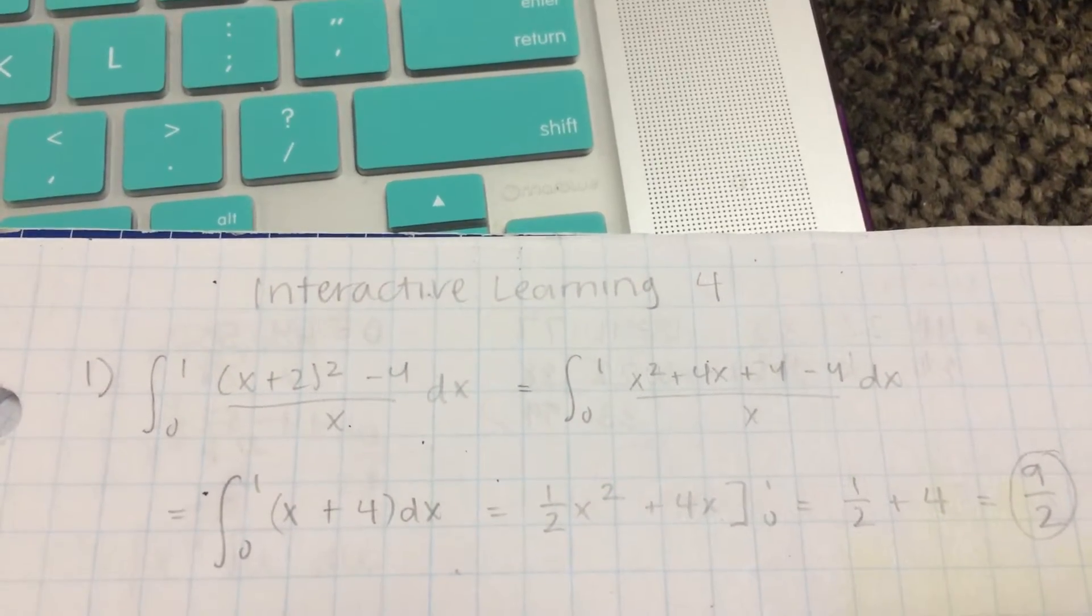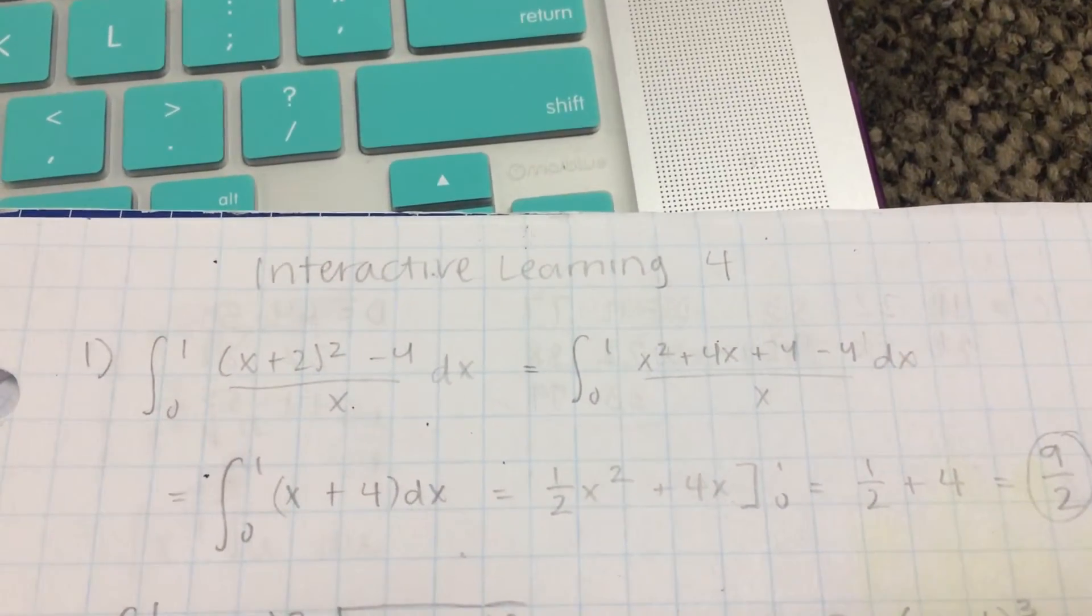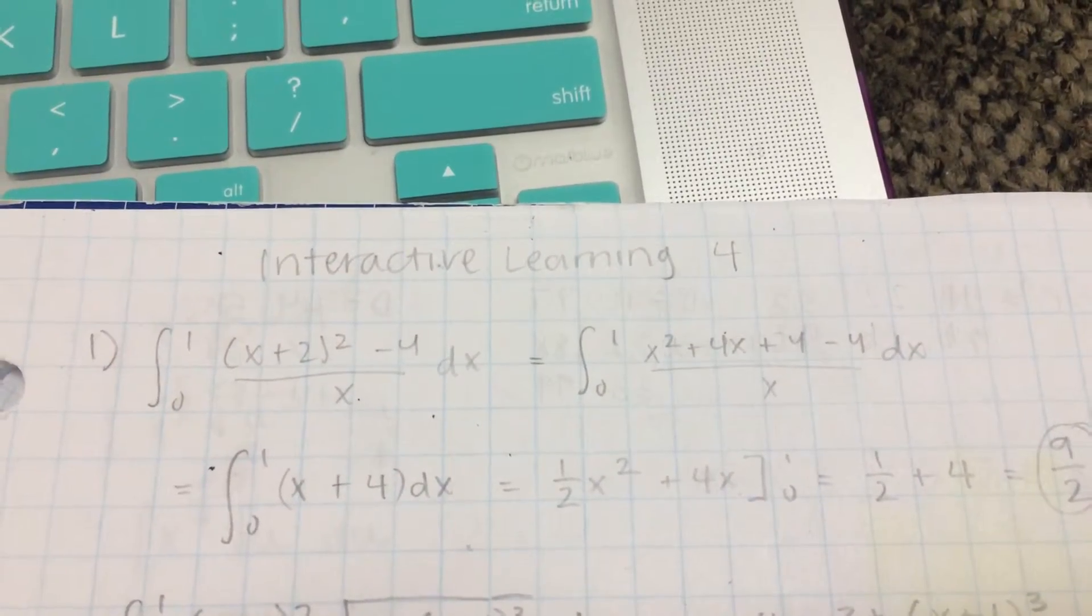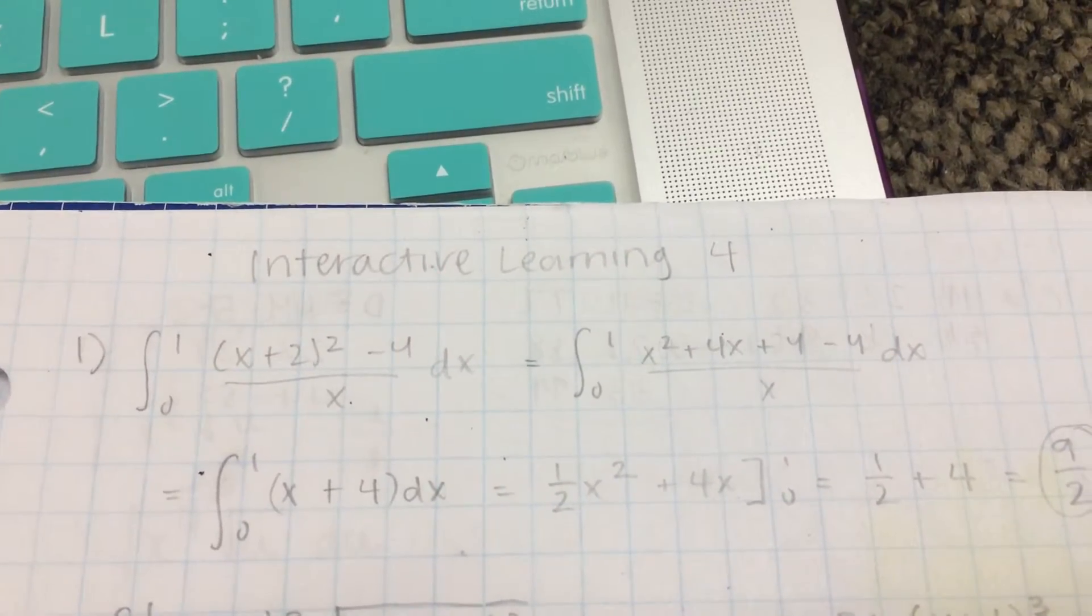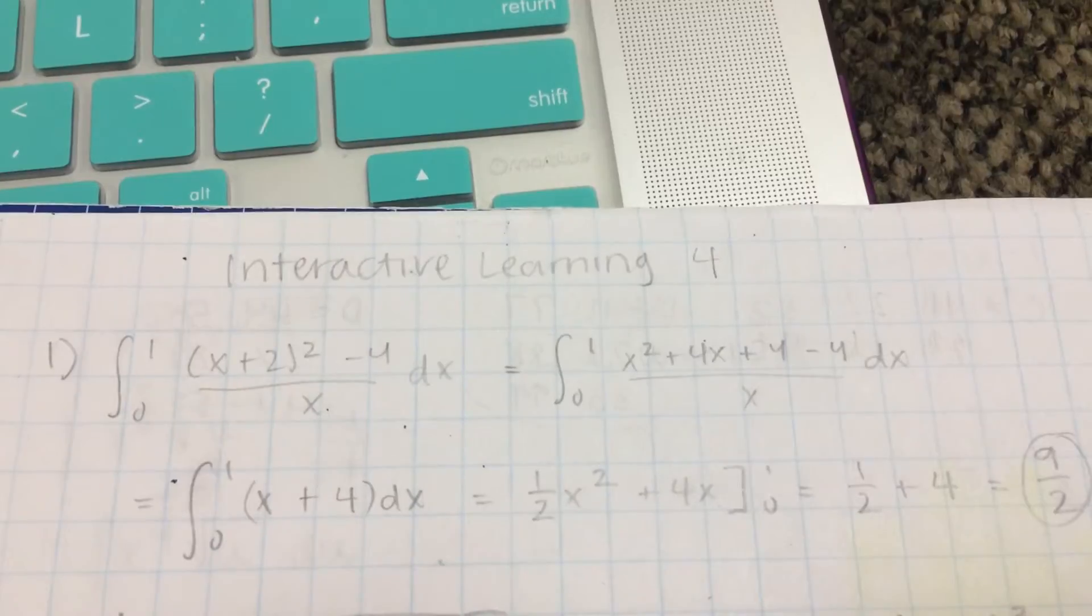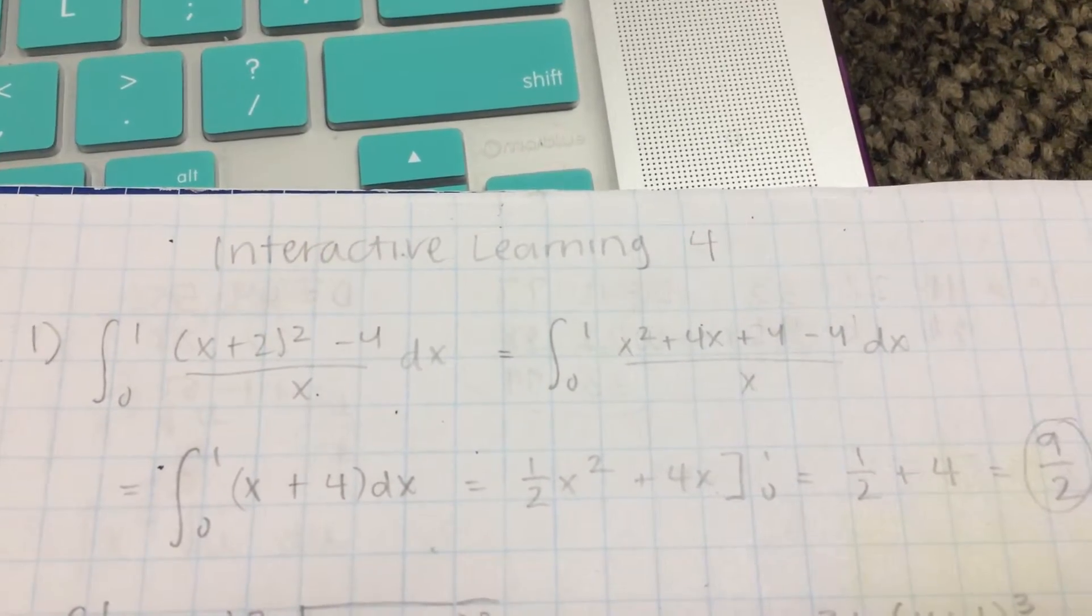And then you can cancel the higher terms with the x on the bottom, giving you the integral from 0 to 1 of x + 4 dx. Then we have to take the integral and we get 1/2 x^2 + 4x from 0 to 1.